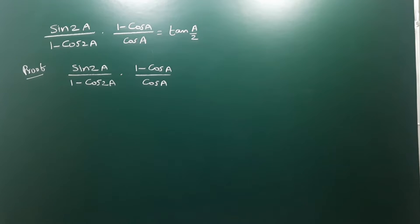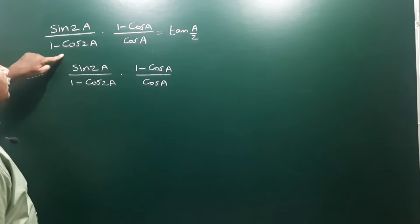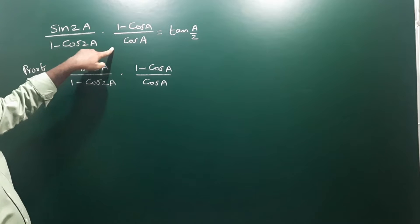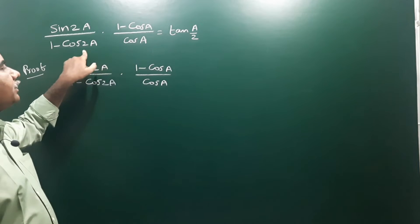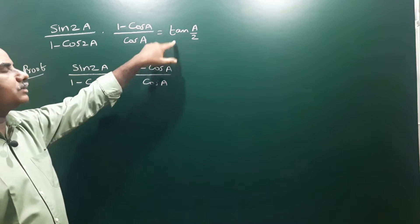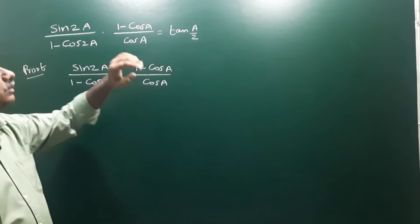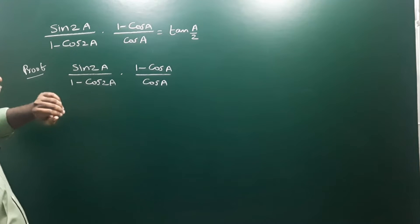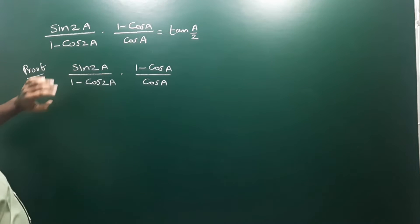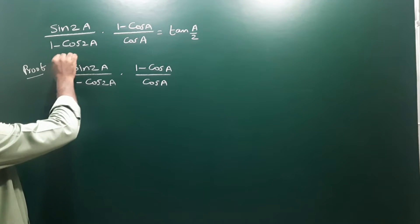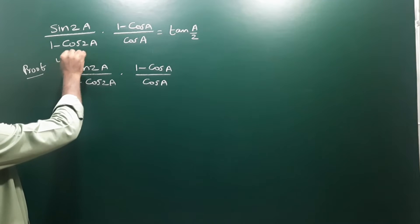Next problem: sin 2a divided by (1 minus cos 2a), multiplied by (1 minus cos a) divided by cos a. We have to show that this is equal to tan(a/2). So let us take the LHS.